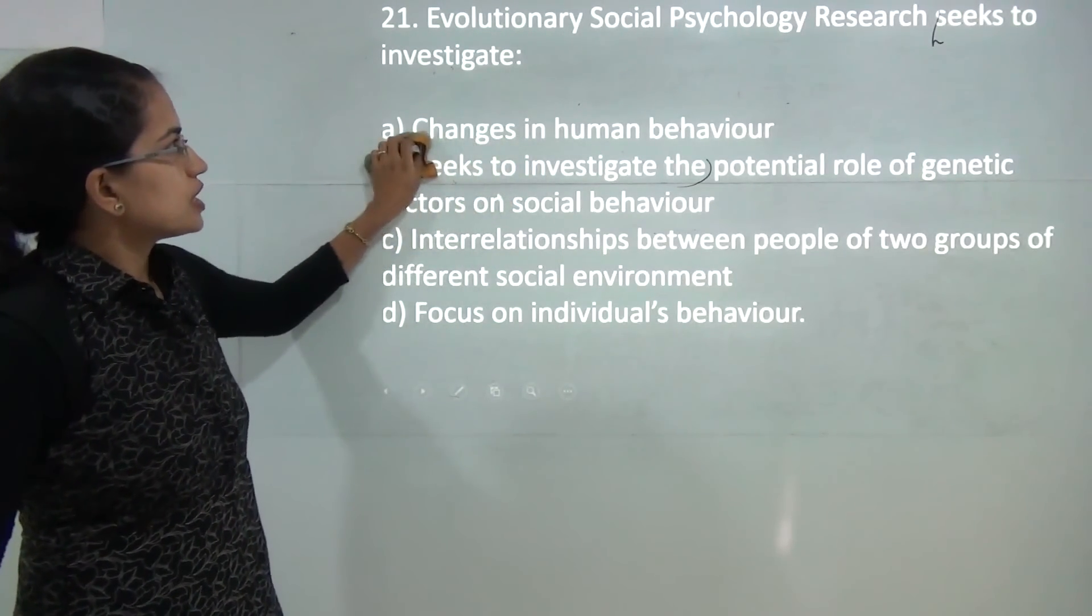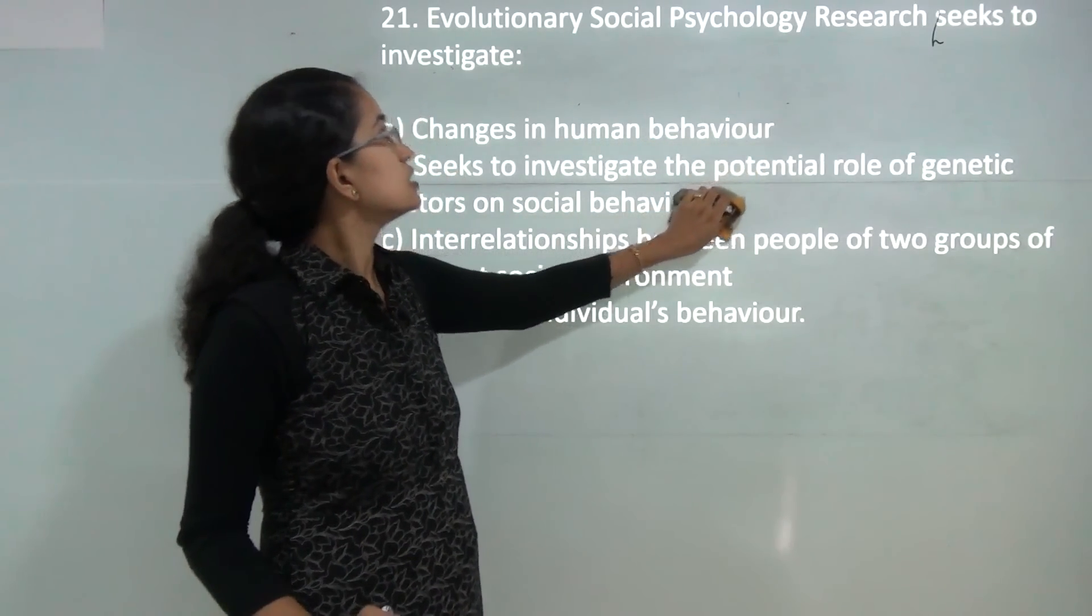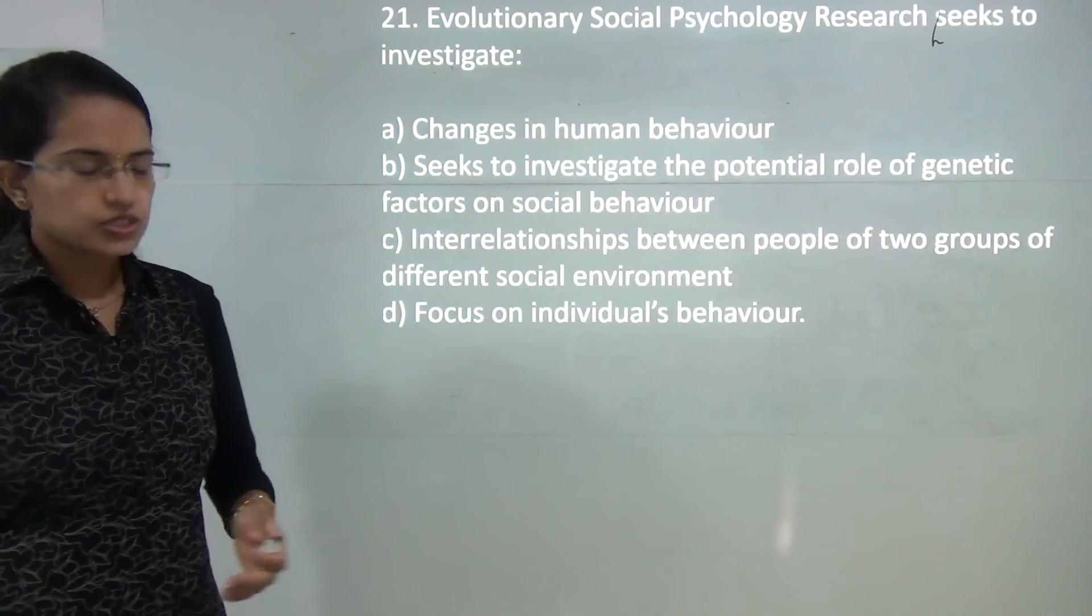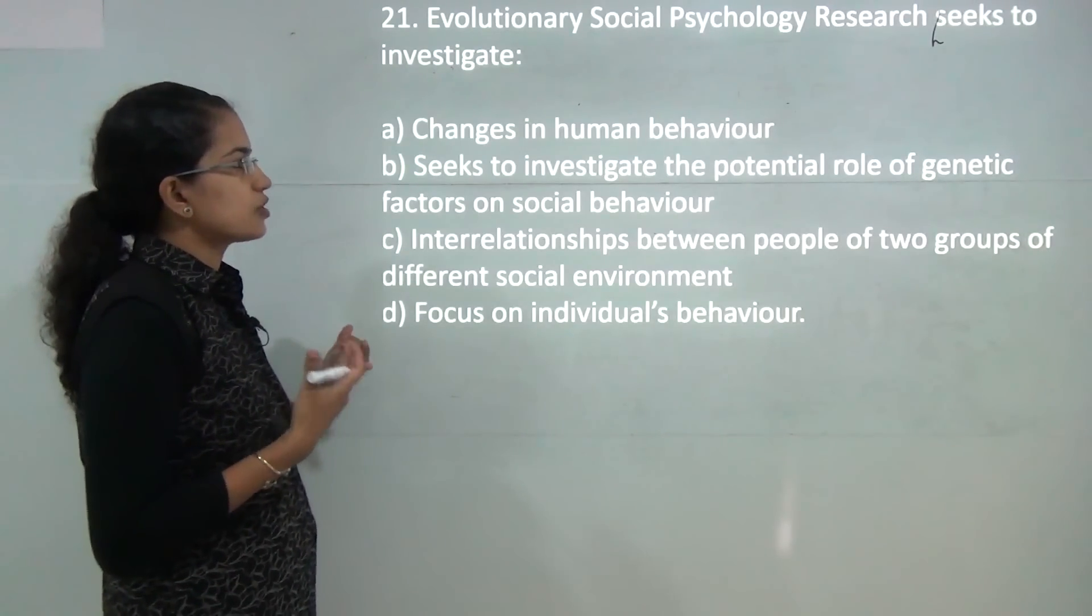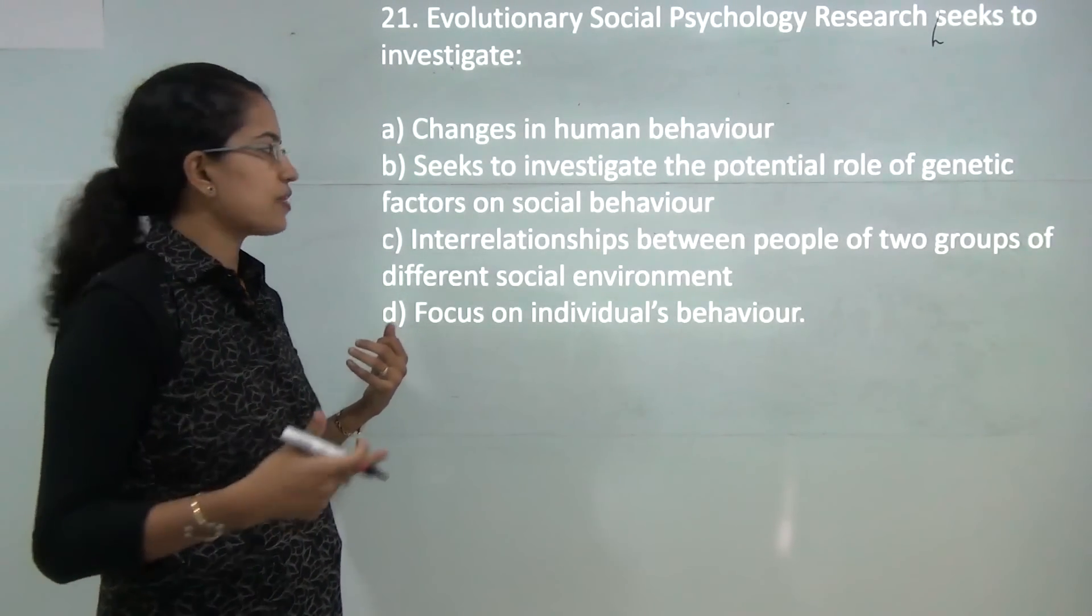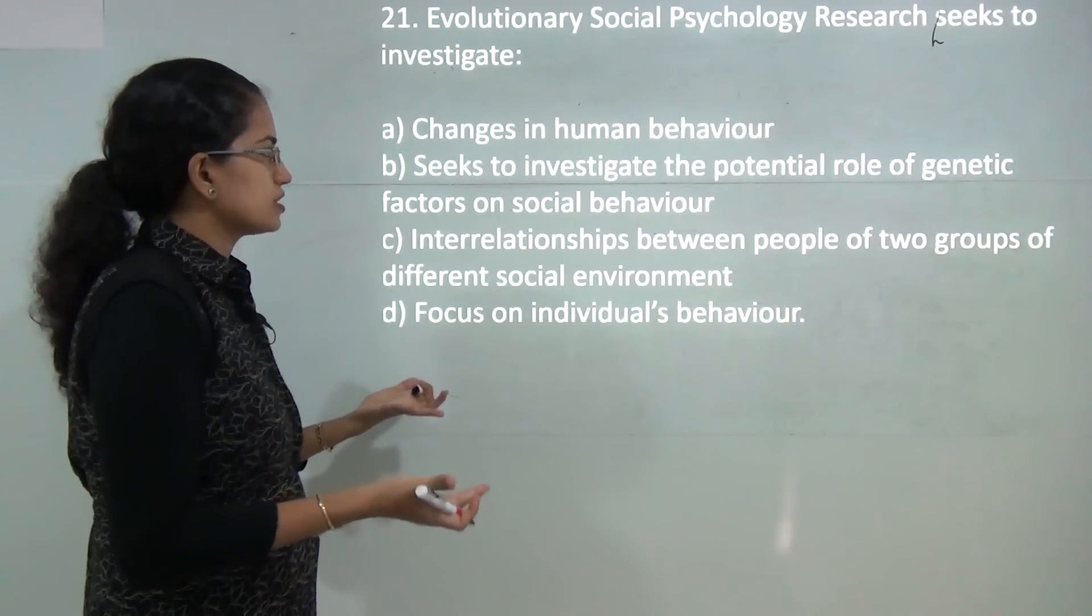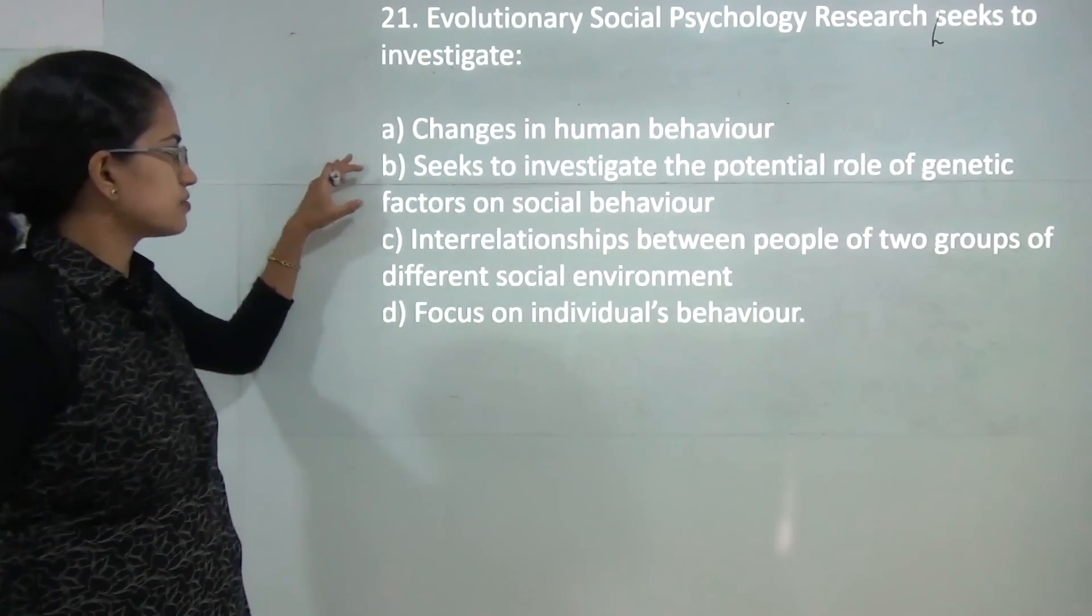Next: evolutionary social psychology research seeks to. Evolutionary social psychology talks about the role of genetic factors and how they affect social behavior. So correct answer would be B.